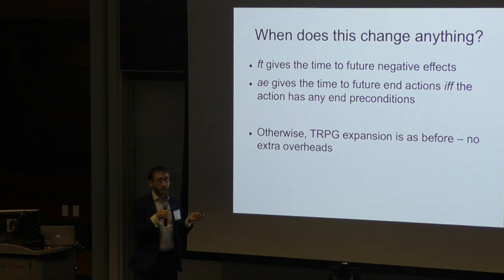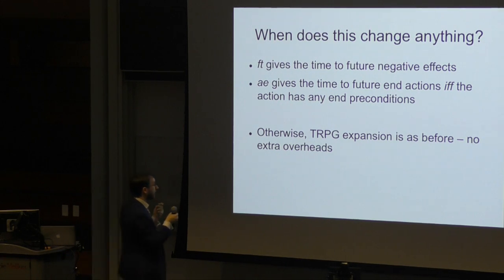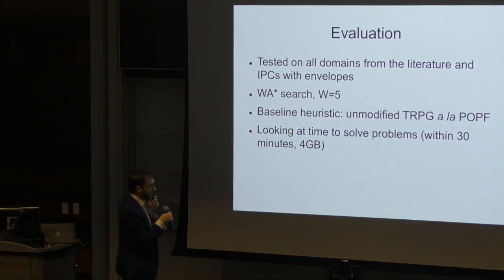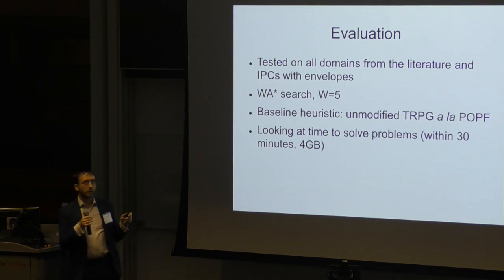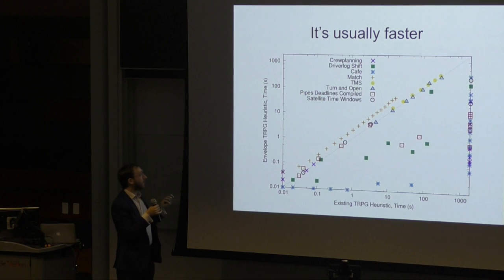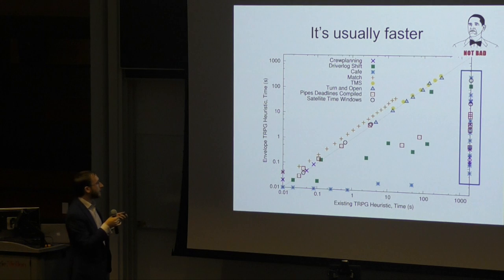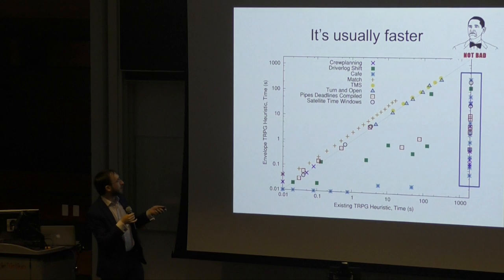So this is only going to change anything if we have any negative effects or if we have any preconditions. Otherwise, it's exactly as the pop of TRPG does. So it's not introducing any overheads when it doesn't actually matter. So to evaluate this, we used it with weighted A star search and all the domains we could find which had envelopes in them. Our baseline heuristic is an unmodified TRPG. It's usually faster. So this is a nice result there. And in particular, there's lots of problems which didn't use to be solvable before at all, and we can now actually solve.